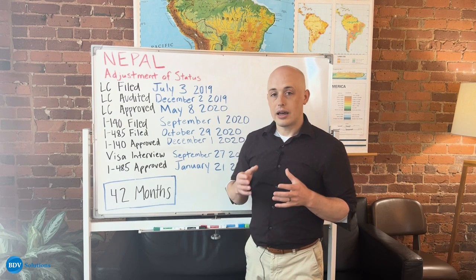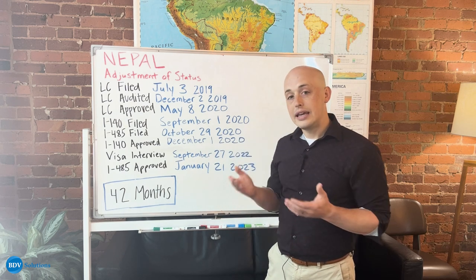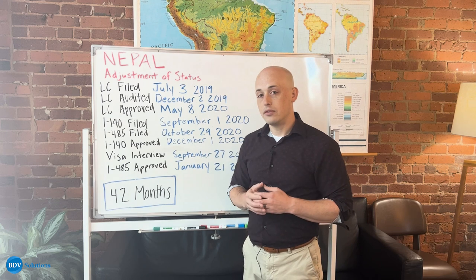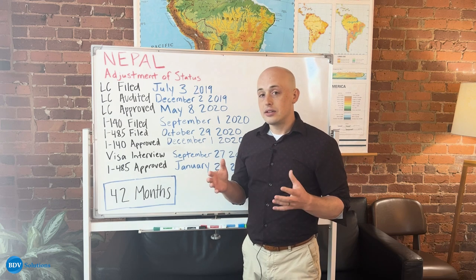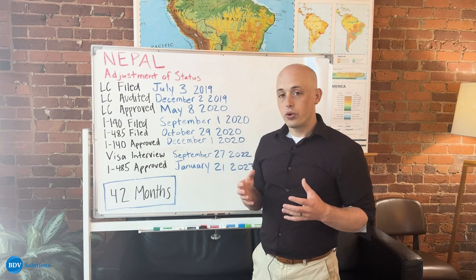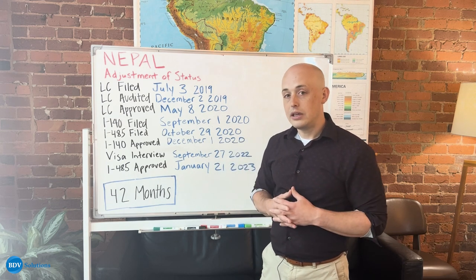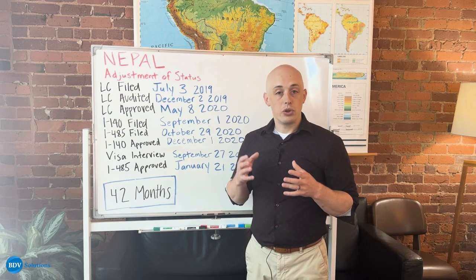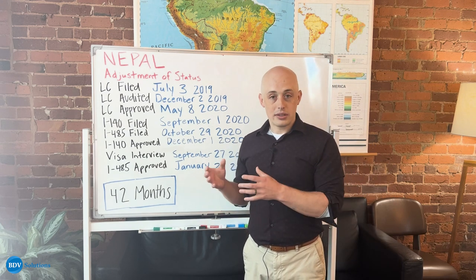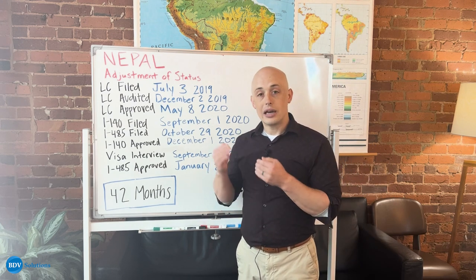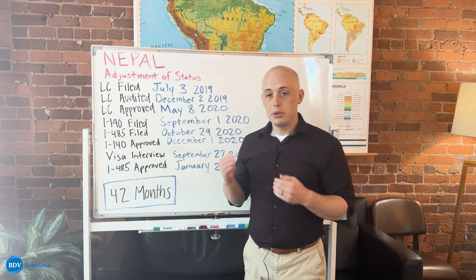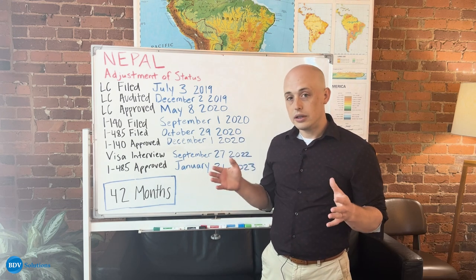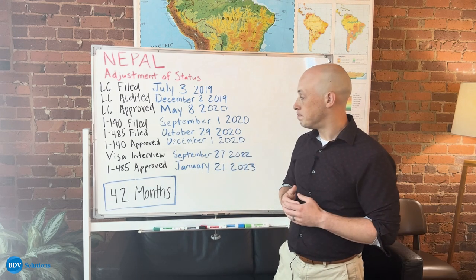I-140s get processed much quicker than the I-485s for a couple of reasons. The first is that the I-140 lays the groundwork for the I-485. The second is that when you file an I-140 through BDV and our contracted attorneys, we file it with premium processing to speed that process up for you. Premium processing is already included in what you pay to BDV.